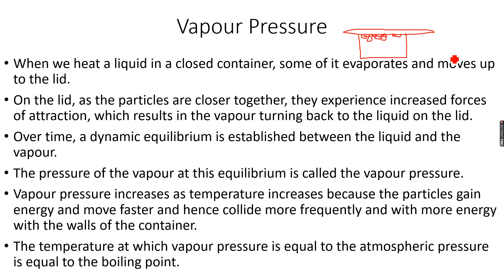These liquid droplets then drop back into the pan, and it's a continuous process — evaporation, liquid droplets form, then they drop back. So over a certain period of time, a dynamic equilibrium is established between the liquid and the vapor.